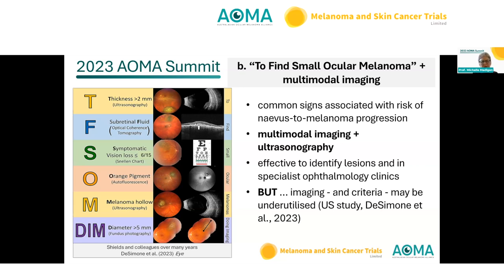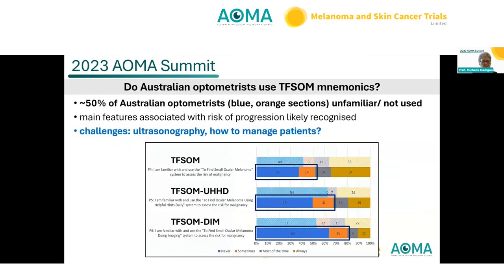There is thought that imaging and criteria may be underutilized. Looking at optometrists, perhaps 50% use the system as described, though they might recognise things like fluid and orange pigment. Challenges include that the TFSOM system involves ultrasound, which optometrists don't have access to, and it doesn't tell us how to manage patients — no clear criteria for referral — so it doesn't really help in the optometric setting.